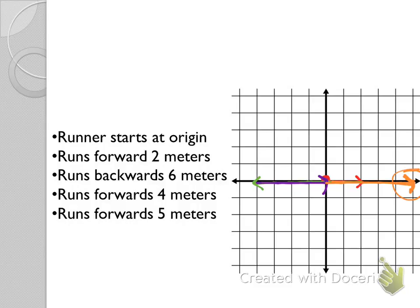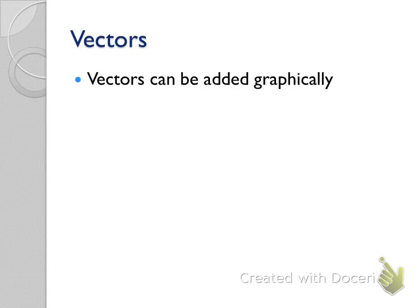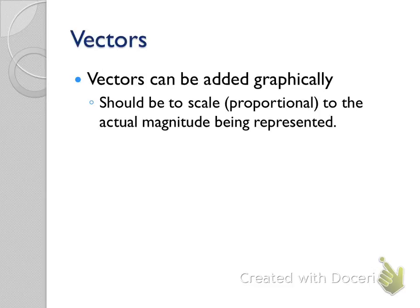Those arrows are vectors — I added them right on top of each other because we're not starting at the origin each time; we're continuing from where we ended. We used a method called graphical addition — adding vectors graphically on a diagram. It sounds more intense than it was; all we did was show what our motion was doing. The vectors should be drawn to scale, which they were since we were on a coordinate system.